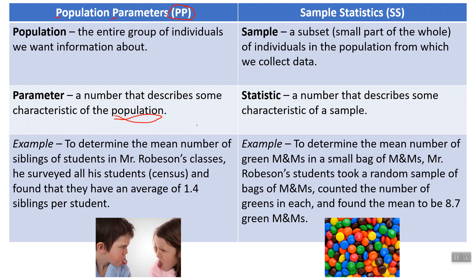If we gather information about a population and find, say, its mean or standard deviation or median or anything about a population, we call that a parameter. For example, to determine the mean number of siblings of students in Mr. Robeson's classes, he surveyed all of his students — when you survey everybody, that's called a census — and found that they have an average of 1.4 siblings per student. That number is a population parameter, the population being all students in my classes.